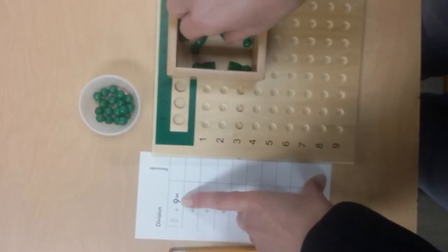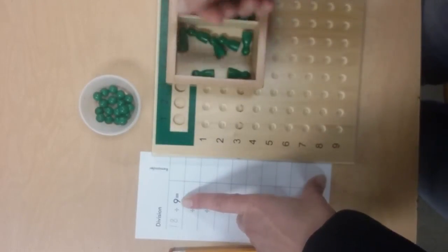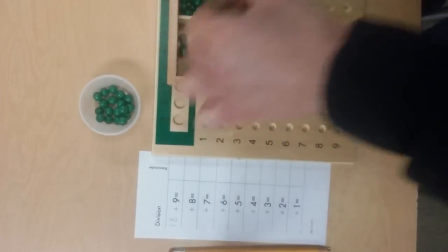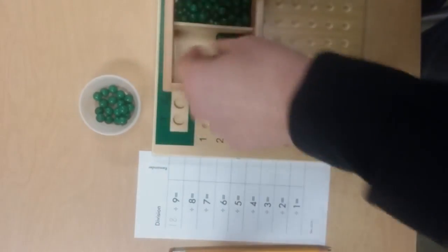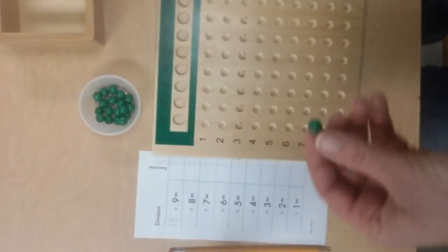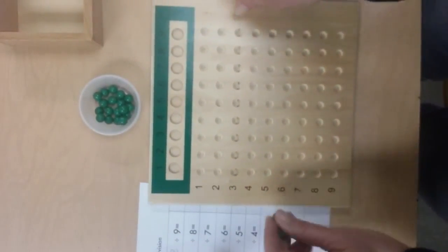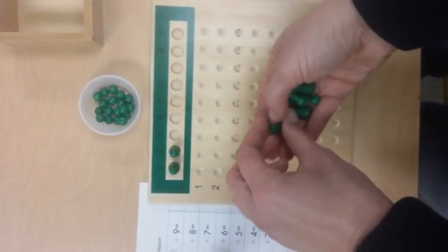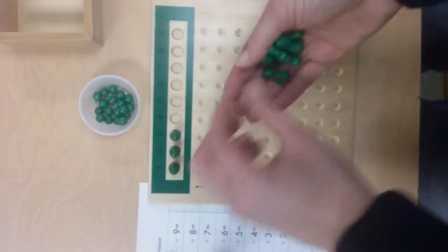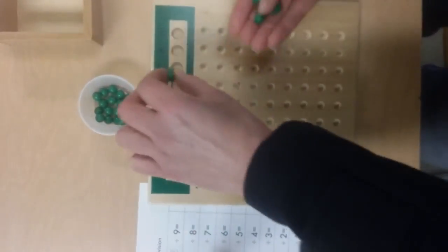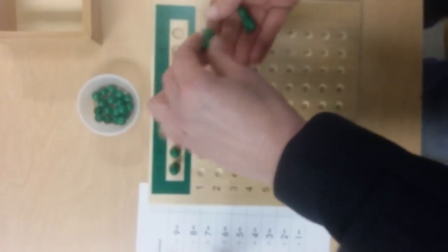They're going to get nine of those—one, two, three, four, five, six, seven, eight, nine—and lay the skittles across the top here. There's a little groove where they fit perfectly. Once those are laid out, they're going to take their beads from their container and distribute them.